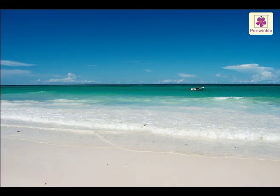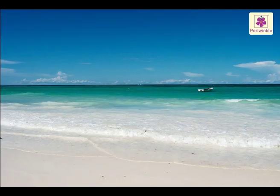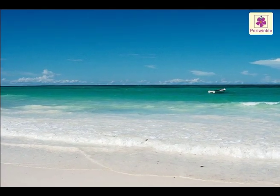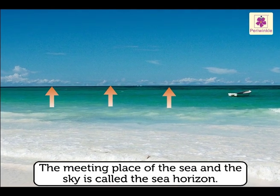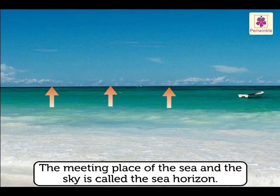If we go to a seashore and look far out at the sea, the sea and the sky seem to meet. This meeting place of the sea and the sky is called the sea horizon.